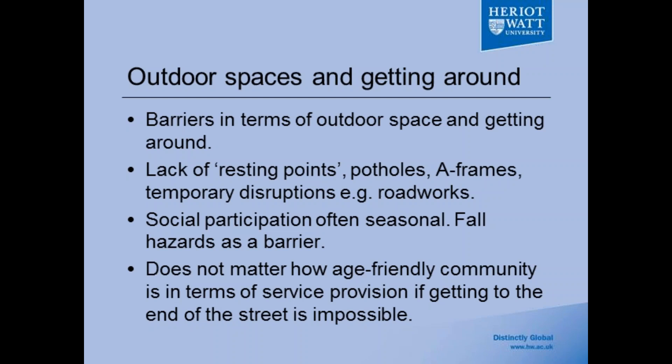One central finding was the need to sort out and manage outdoor spaces. It doesn't matter how age-friendly a community is in terms of available services if an older adult cannot navigate the 30 or 40 metres from home to the main high street. Barriers included the lack of resting points and street furniture, potholes and poor street maintenance, A-frames and sandwich boards left in the centre of high streets, and temporary disruptions from roadworks that can significantly disrupt movement — more acutely impacting those with mobility difficulties.